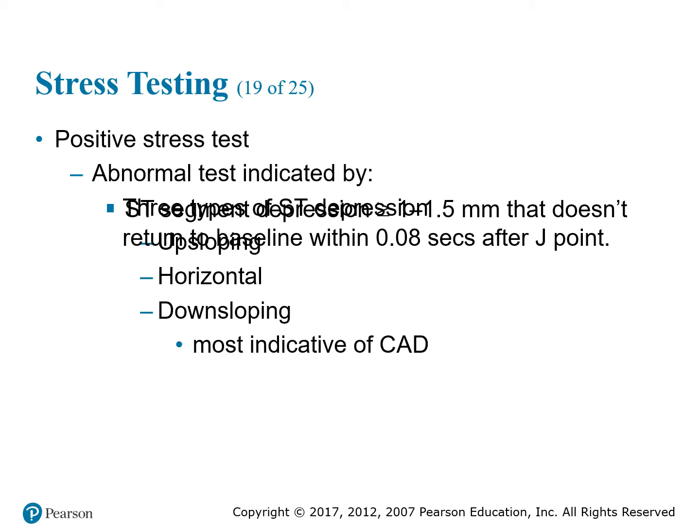What are indications of a positive stress test? A positive stress test — in other words, an abnormal stress test — means a bad result; a negative test means good. A positive stress test is indicated by ST segment depressions greater than or equal to 1.0 to 1.5 mm that do not return to baseline within 0.08 seconds, which is two small blocks after the J-point.